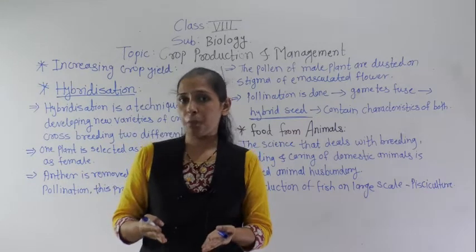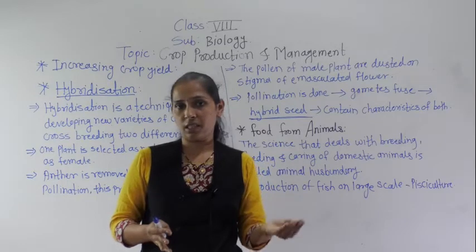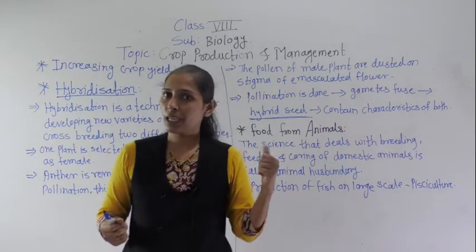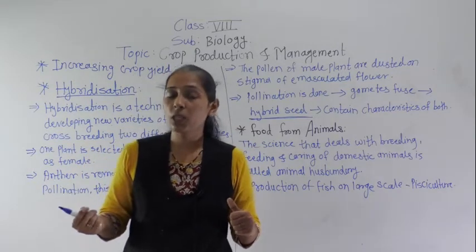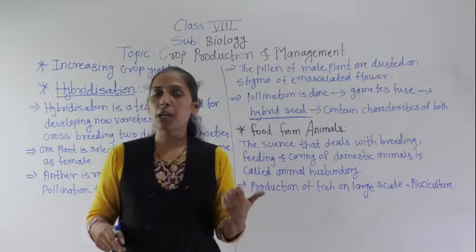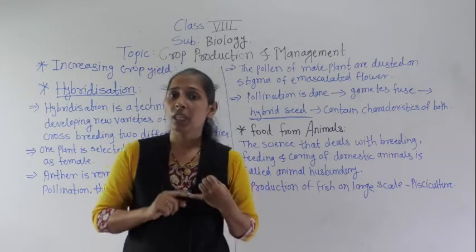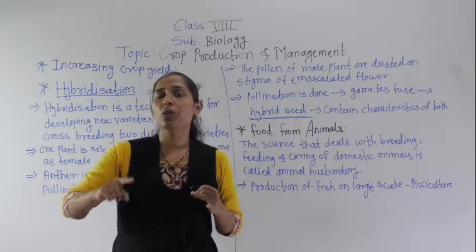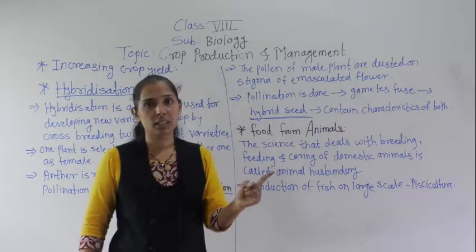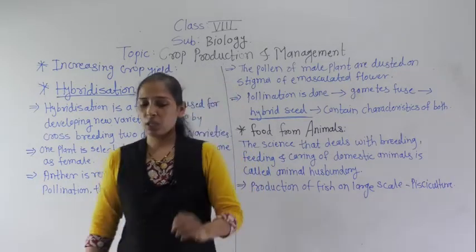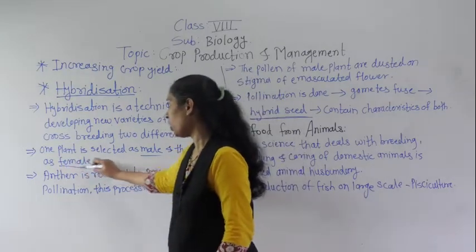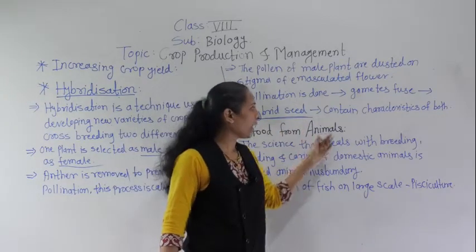For example, if you want more crop yield and also want the variety to be disease resistant, you select one parent that has good disease resistance characteristics and another parent that gives a higher amount of yield. By combining these two, at the end we get a hybrid seed that has both good disease resistance and higher yield.